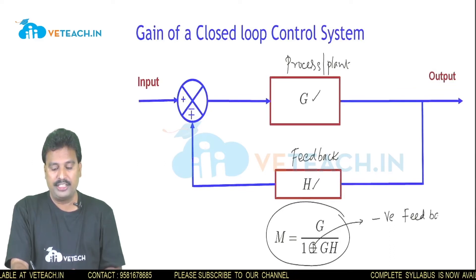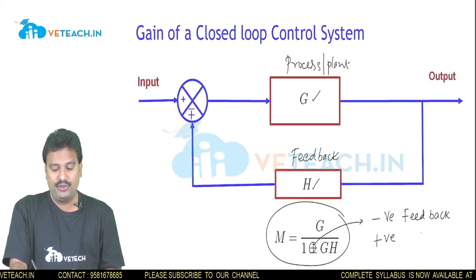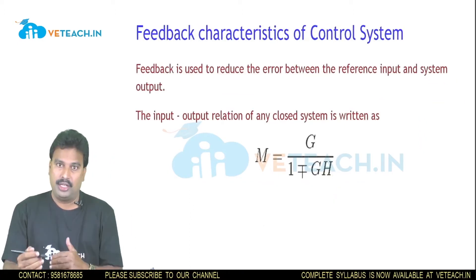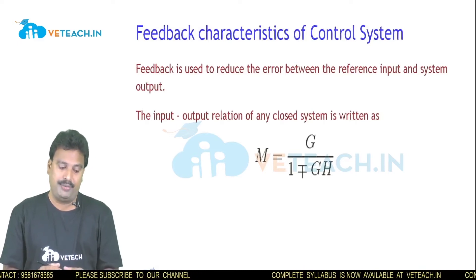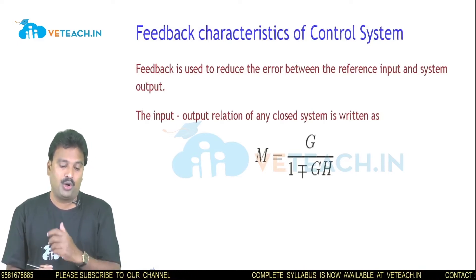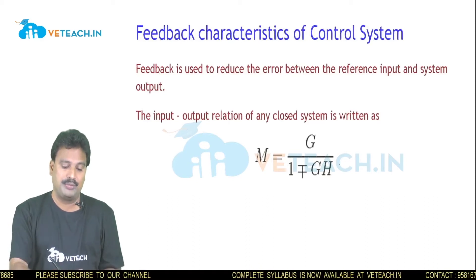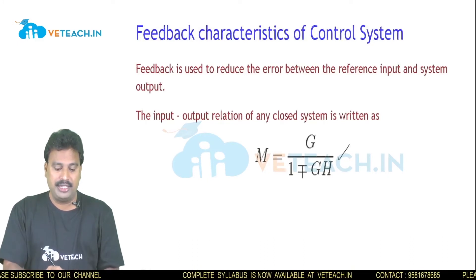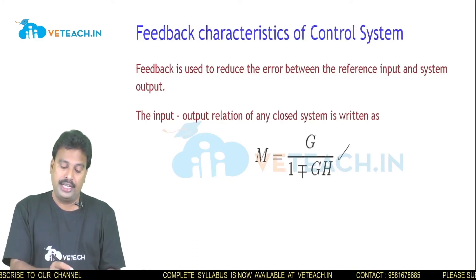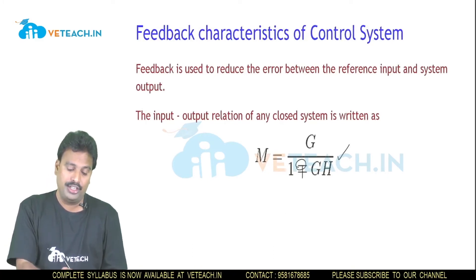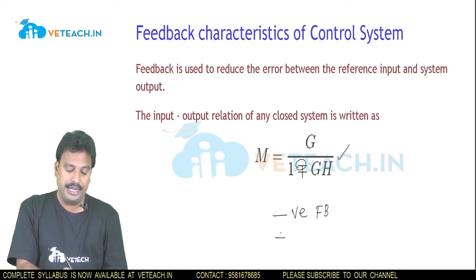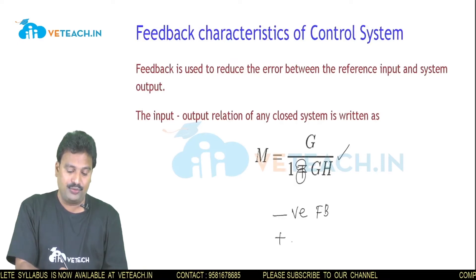The plus sign in 1 plus GH is for a negative feedback system, and the minus sign in 1 minus GH is for a positive feedback system. So the input-output relation for any closed loop system is M = G / (1 ± GH).